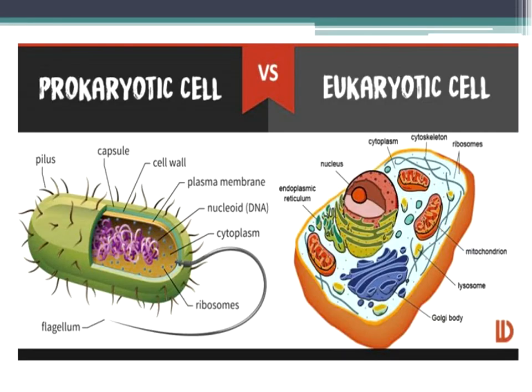So first of all, as you'll learn when you do your egg lab, there are two types of cells on Earth. That's it. There are only two types. There's the prokaryotic cell and the eukaryotic cell. I want you to look at these and tell me at least one difference between the prokaryotic cell and the eukaryotic cell.